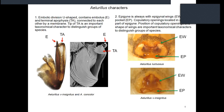The following characters are unique for Allurellus among all jumping spiders in general. For males, the embolic division is U-shaped and contains the embolus and terminal apophysis connected to each other by a membrane. The tip of the terminal apophysis is an important taxonomical character to distinguish groups of species — for example, paddle-shaped in the venustus group, and curved with many spurs on its rim in the erogenosis group.